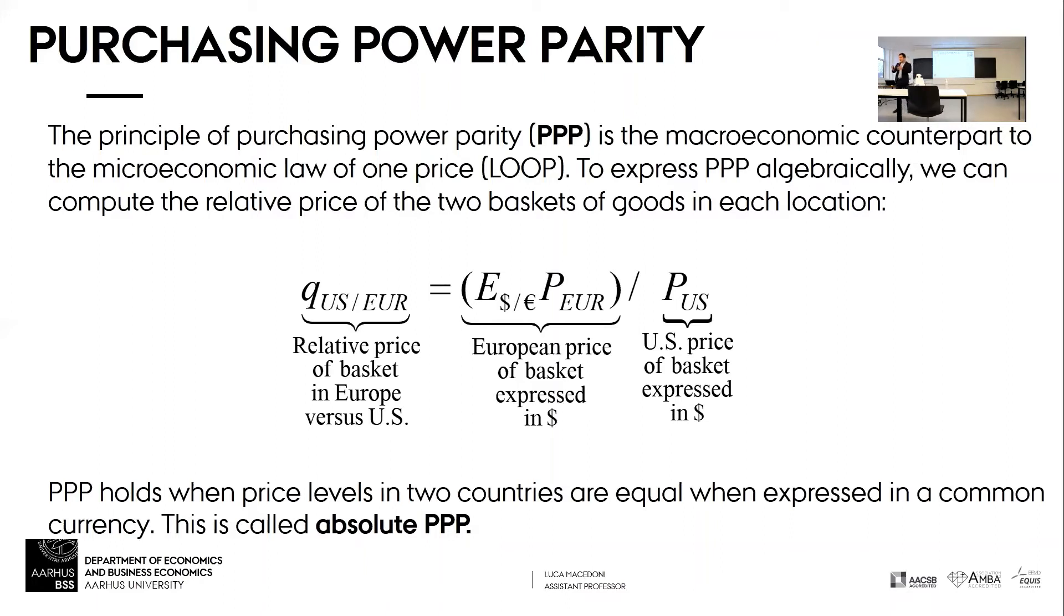If this Q equals one, that means that the price of the basket of goods in the US is the same as the price of the basket of goods in Europe. They both have the same purchasing power. Or if you like, a dollar has the same purchasing power in Europe and in the US, because it can buy exactly the same number of goods, the same basket of goods.